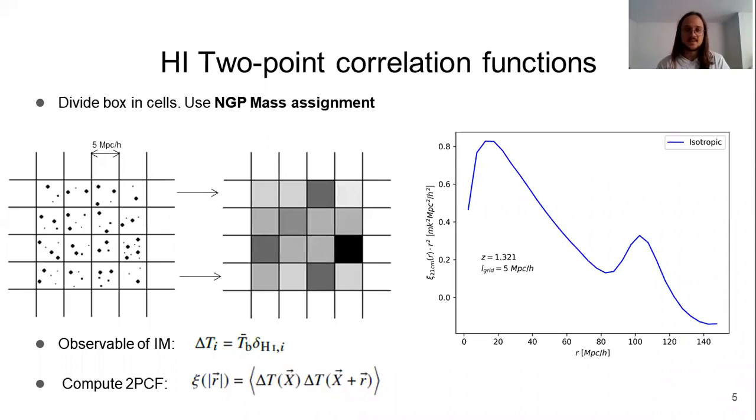Now, we have said that using SAGE, we are able to extract the neutral hydrogen in the simulation. But what we want is to compute the two-point correlation function of the neutral hydrogen.